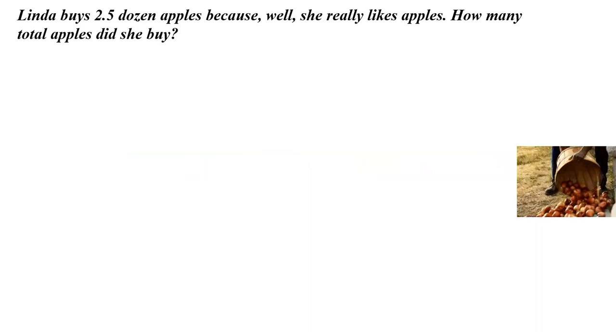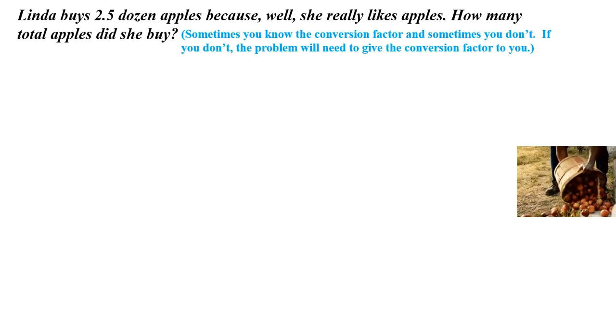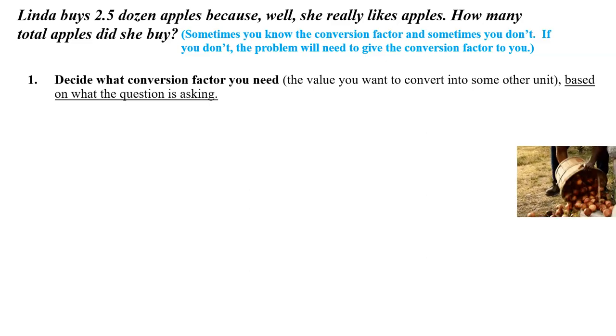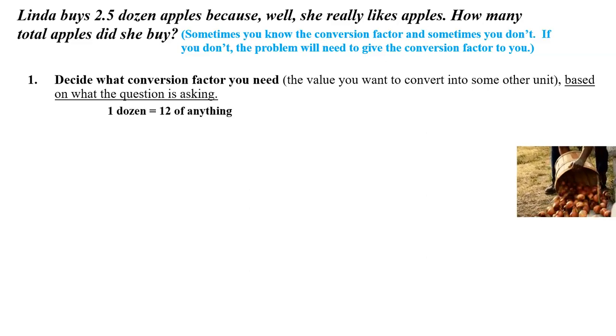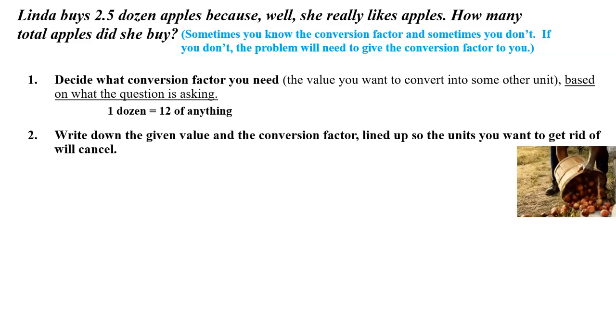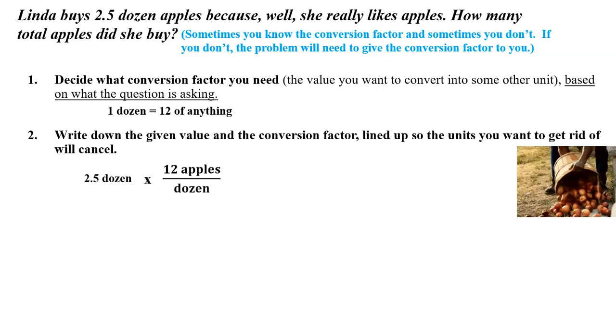So here's another one. Linda buys 2.5 dozen apples because she really likes apples. For some reason, people in math problems tend to really like produce. So how many total apples did she buy? Now, we know the conversion factor here because we know what a dozen is, but if you don't know the conversion factor right off the top of your head, more than likely the problem is almost always going to give it to you. All right, decide what conversion factor you need. Just said we know what the conversion factor is. One dozen is 12 of anything. Step 2, write down the given value and the conversion factor lined up so the units you want to get rid of will cancel. So there's the given value. There's the conversion factor. You notice this time the number is on top, but we're lining it up so that the dozens will cancel out in the next step.